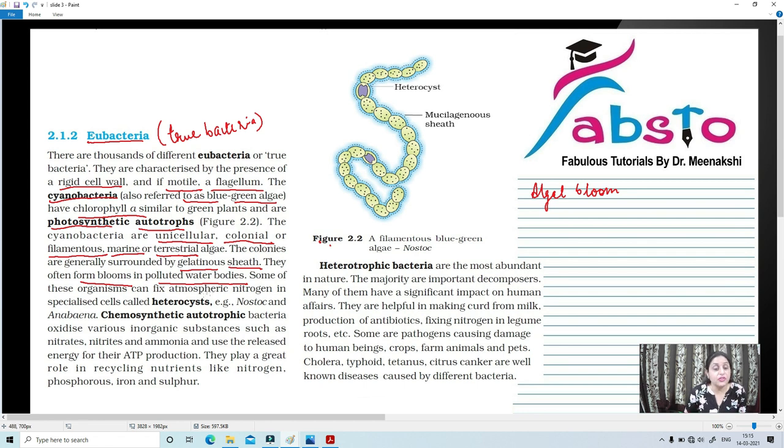Some of these organisms can fix atmospheric nitrogen and have specialized cells called heterocysts. Very important question. This question is asked very often in your exam. How can cyanobacteria fix atmospheric nitrogen? They can fix atmospheric nitrogen because of the presence of specialized cells known as heterocysts. So here we are going to talk about the examples of cyanobacteria. These are Nostoc and Anabaena. These are the bacteria, cyanobacteria.